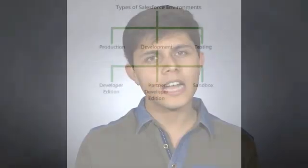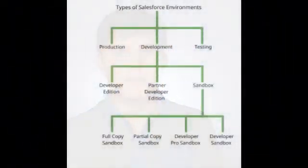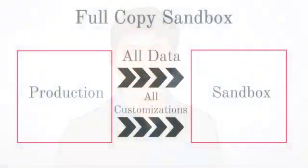Sandbox is divided into four subtypes: Full Copy Sandbox, Partial Copy Sandbox, Developer Sandbox, and Developer Pro Sandbox. Full Copy Sandbox is an exact replica of the production environment — it contains all the data and customizations from production. It can be used for final staging of an app or feature before deploying to production, and will help you test not only the app or feature but also the deployment procedure.